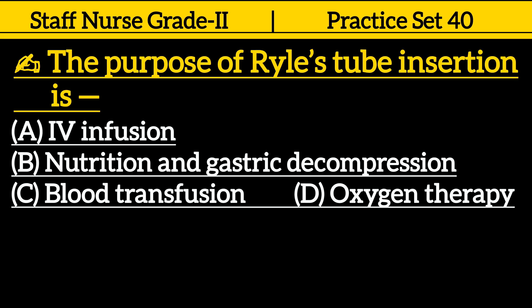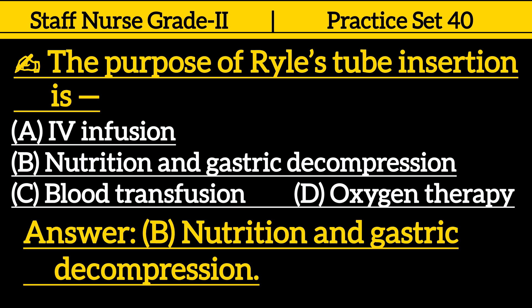The purpose of Ryle's tube insertion is: Option A. IV infusion. Option B. Nutrition and gastric decompression. Option C. Blood transfusion. Option D. Oxygen therapy. Correct answer is Option B. Nutrition and gastric decompression.